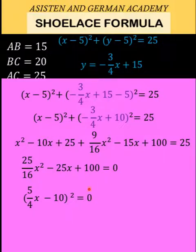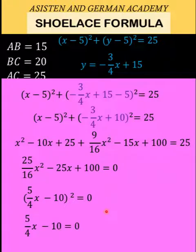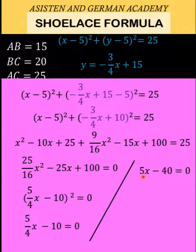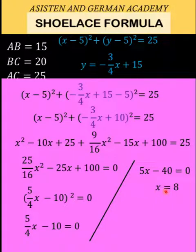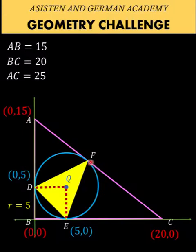Since the right side is 0, we take the square root of both sides to get 5x/4 − 10 = 0. Multiplying both sides by 4 gives 5x − 40 = 0, so x = 8. Substituting x = 8 back into y = −(3/4)x + 15 gives y = 9. Therefore, point F has coordinates (8, 9).